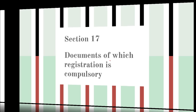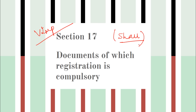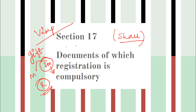Section 17 is very important — it lists documents for which registration is compulsory. The word 'shall' is used, so it is necessary to register those documents. First, if there is a gift of immovable property, you must get it registered because section 17 mandates it. Second, any other non-testamentary instrument of a value above 100 rupees must be registered. Third, any non-testamentary instrument acknowledging payment or receipt must be registered.